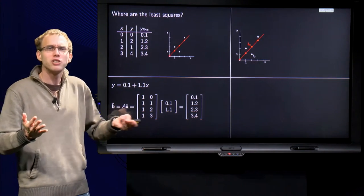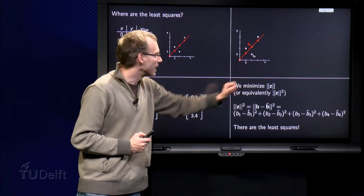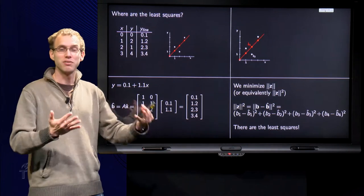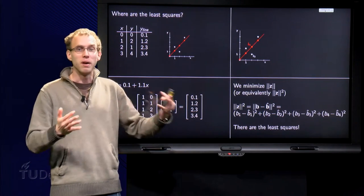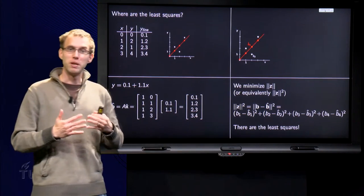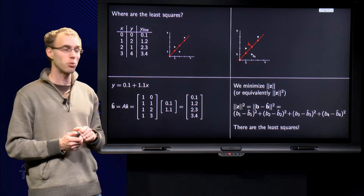What were we actually minimizing? Well, we minimize the length of z. Well if we minimize the length of z, we can also minimize the length of z squared, that is the same. So equivalently we can minimize the length of z squared. So what is the length of z squared?